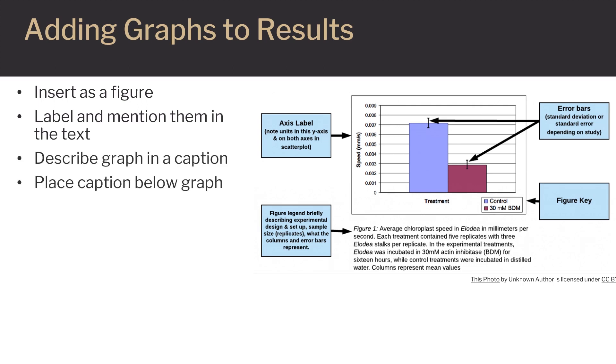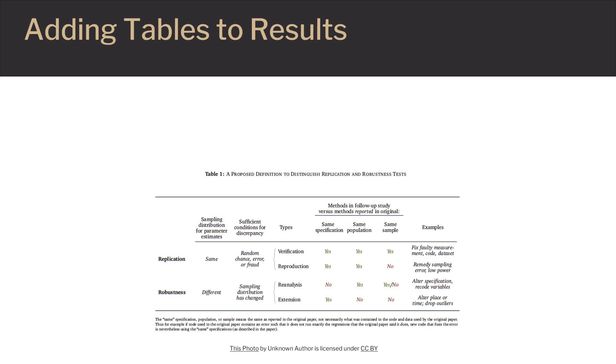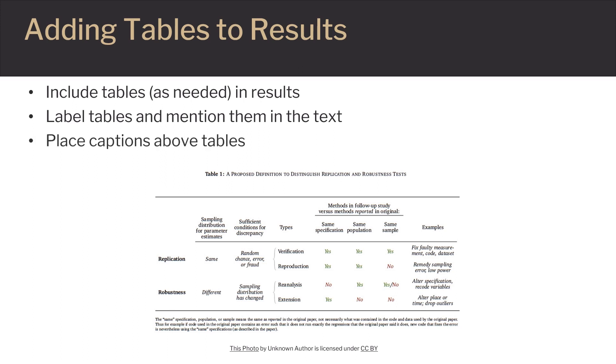The graph itself should have labeled axes with the units and a legend or figure key if one is needed. This information about the graph should be reiterated in the caption. The caption goes below the graph. When adding a table into the results, insert it and label it as table with a sequential numerical order. The table should be labeled as table number. The caption should be above the table.